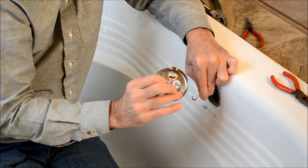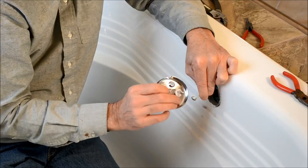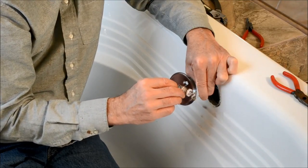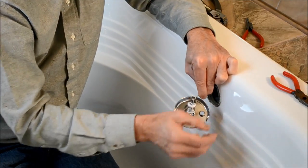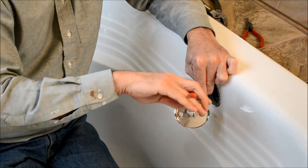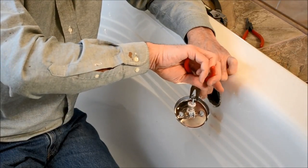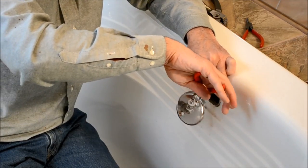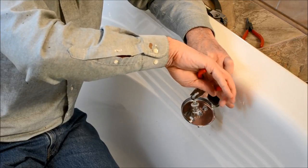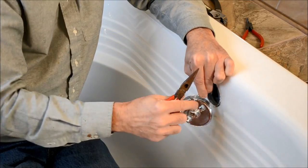We're going to slide the new faceplate cover onto the linkage and then we'll just crimp it down with the needle nose pliers. We don't want to crimp it too much but just enough that we prevent the faceplate cover from slipping off, like that.